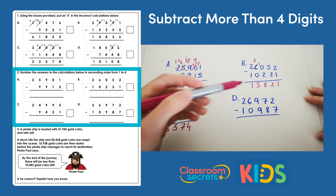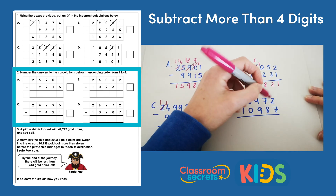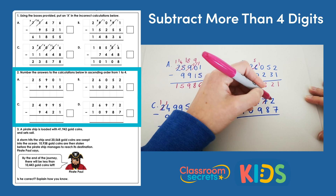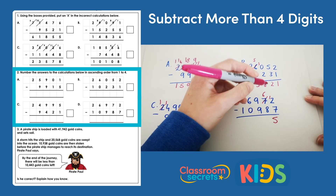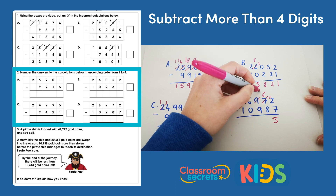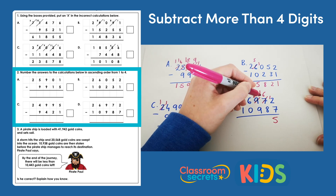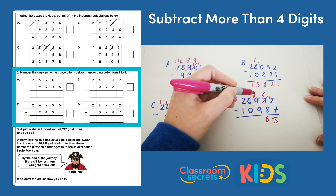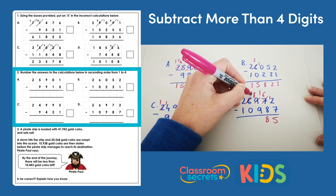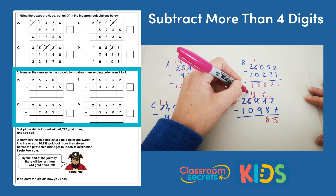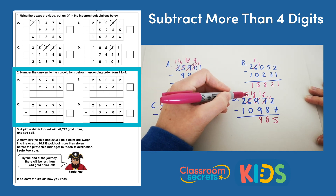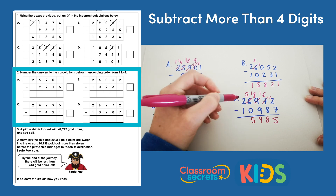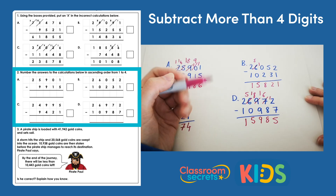And finally d: 2 subtract 7 — we can't do, so we exchange and do 12 subtract 7, which is 5. 6 subtract 8 — we can't do, so we exchange, and 16 subtract 8 gives us 8. 8 subtract 9 — we can't do, so another exchange; 18 subtract 9 is 9; 5 subtract 0 is 5; and 2 subtract 1 is 1, giving us 15,985.